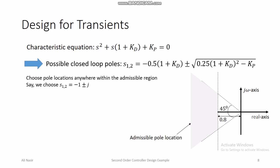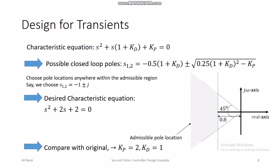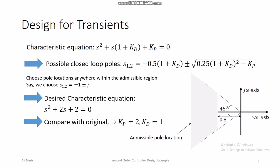Suppose we choose closed loop poles at −1 ± j. Both poles lie within the admissible region. The characteristic equation that places poles at −1 ± j is s² + 2s + 2 = 0. Comparing with our characteristic equation s² + (1 + kd)s + kp = 0, we get kd = 1 and kp = 2.